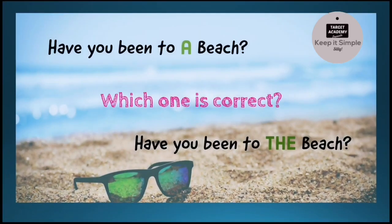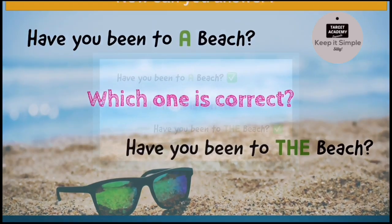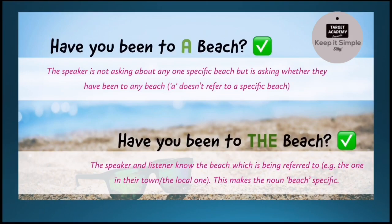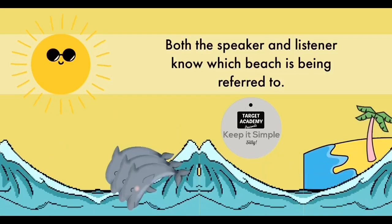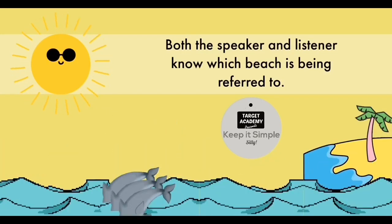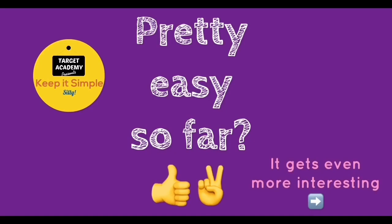So now can you answer which one is correct: 'Have you been to a beach?' or 'Have you been to the beach?' If you guessed, congratulations — both are correct! Which one to use depends on the situation. 'Have you been to a beach?' means have you been to any beach — not a specific beach. 'Have you been to the beach?' is used when both speaker and listener know which specific beach is being discussed — for example, the beach near where you're vacationing. English is very interesting, and if you have a sense of what is right, you will never be wrong with your grammar.